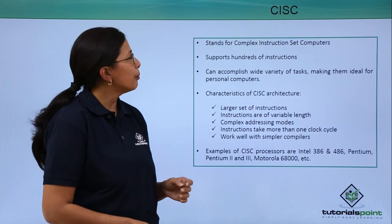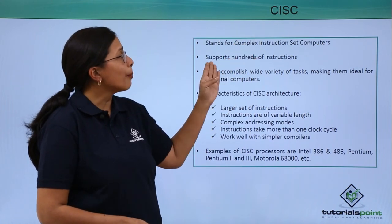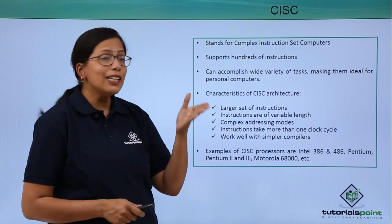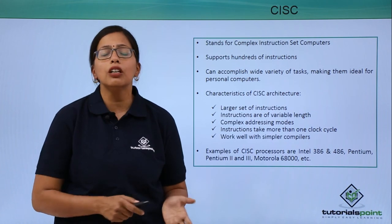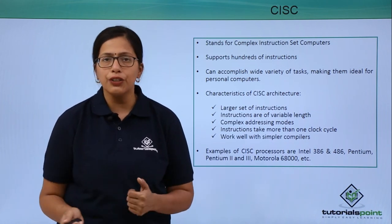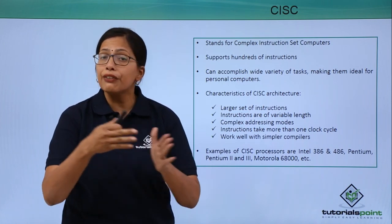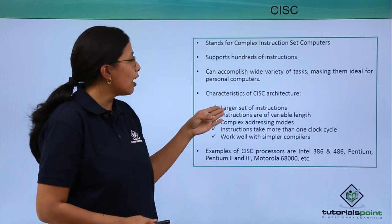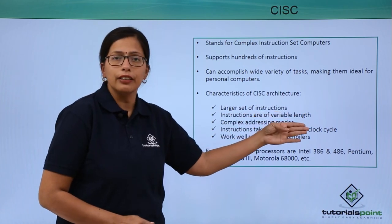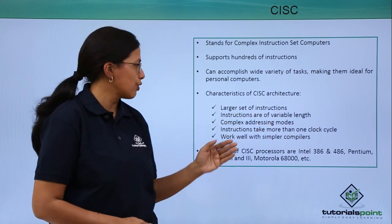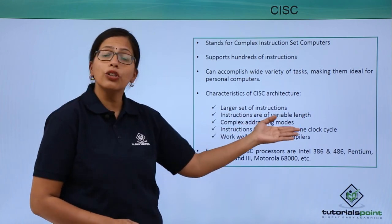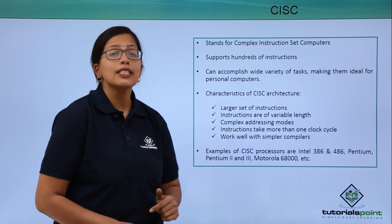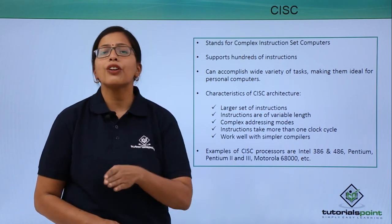Let's now look at the other type of microprocessor architecture — CISC, which stands for Complex Instruction Set Computers. Here there is a wide range of instructions. We need them because there are some computers that have to perform a large variety of tasks, requiring a large variety of instructions — very different instructions that cannot be implemented using simpler ones. Characteristics of CISC include a larger set of instructions, variable-length instructions, complex addressing modes, and instructions that take more than one clock cycle, meaning the CPU spends more time on the same job. CISC processors also work well with simpler compilers.